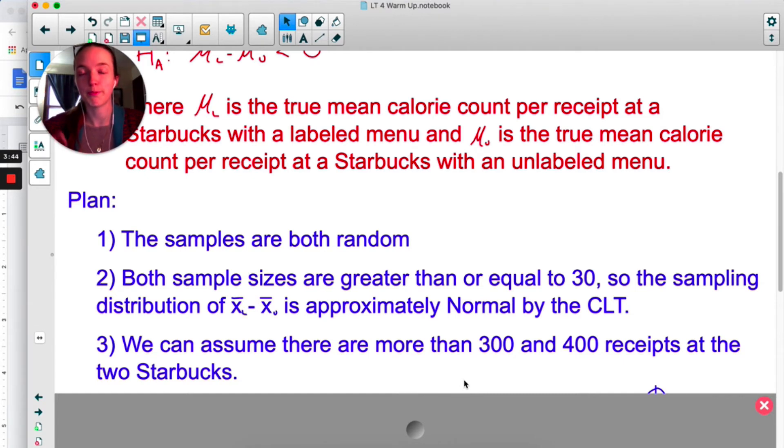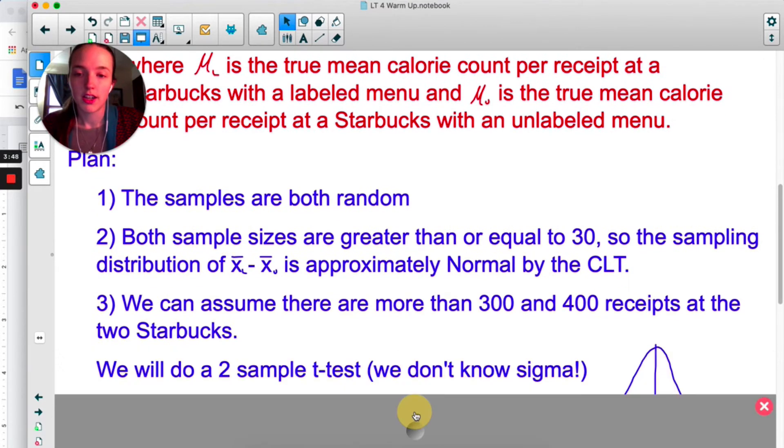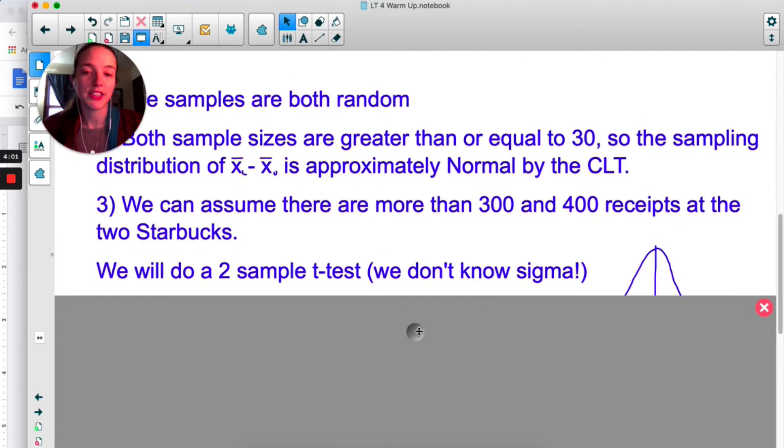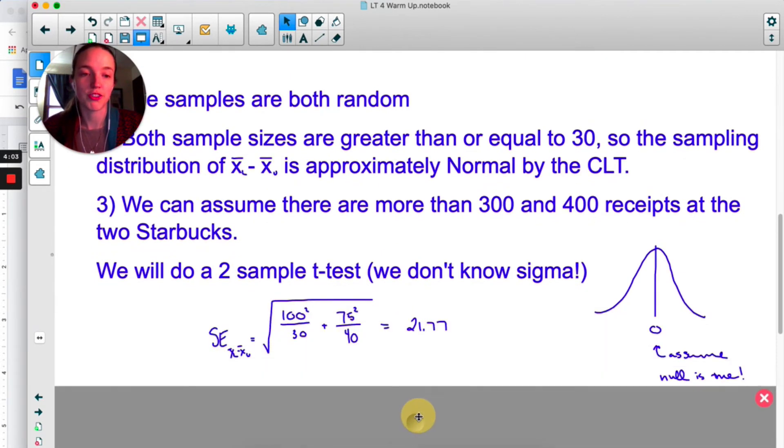We're going to do a two-sample t-test. We have two different samples. We don't know the true standard deviation of either population, which means we have to do a t-test, not a z-test.